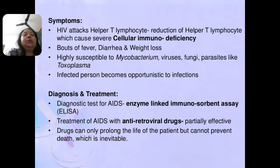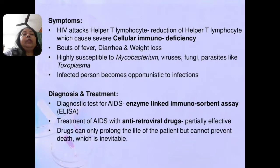HIV attacks helper T-lymphocyte cells, and the reduction of these cells causes severe cellular immunodeficiency in the human body. Symptoms include recurring bouts of fever, diarrhea, and regular weight loss. Due to the inefficiency of the immune system, the person becomes highly susceptible to Mycobacterium, TB bacteria, viruses, fungi, and sometimes parasites like Toxoplasma. Infected persons thus become vulnerable to opportunistic infections.